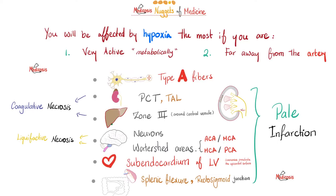As for the liver, it's zone 3 that is most vulnerable. Zone 3 is around the central venule and far away from the artery. If you draw the hexagon, zone 3 is in the middle near the central vein, while the artery is at the periphery — far away from zone 3. That's why zone 3 is the most vulnerable to hypoxia in the liver.